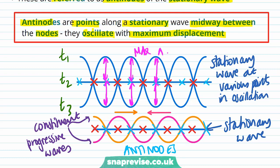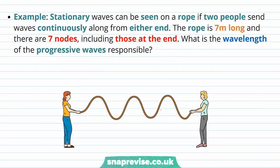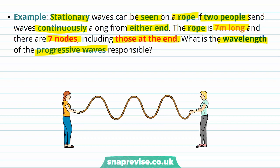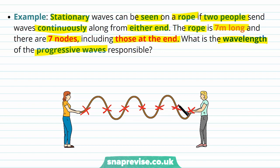Now let's look at an example. Stationary waves can be seen on a rope if two people send waves continuously from either end. The rope is seven meters long and there are seven nodes including those at the ends. We need to find the wavelength of the progressive waves responsible. With seven nodes, we can count them: one at each end where the person holds the rope (zero displacement) plus five in between — totalling seven nodes.